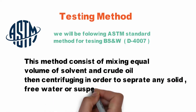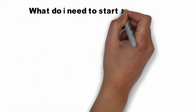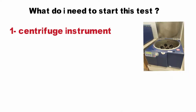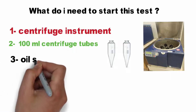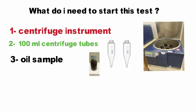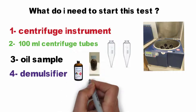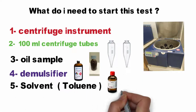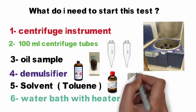To start this test you will need a centrifuge instrument, 100 ml centrifuge tubes, an oil sample, a demulsifier, a solvent — in our case we will use toluene — and a water bath with a heater.